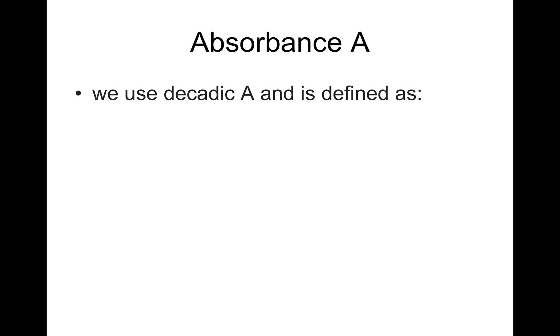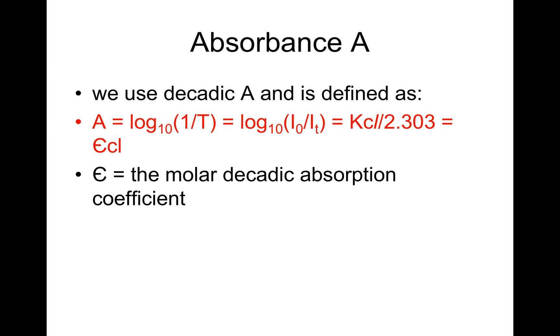Absorbance A, we use decadic A and is defined as A = log₁₀(1/T) = log₁₀(I₀/It) which can be looked at as κcl/2.303 or as εcl, where ε is the molar decadic absorption coefficient. A plot of absorbance A versus concentration c is linear with slope εl.